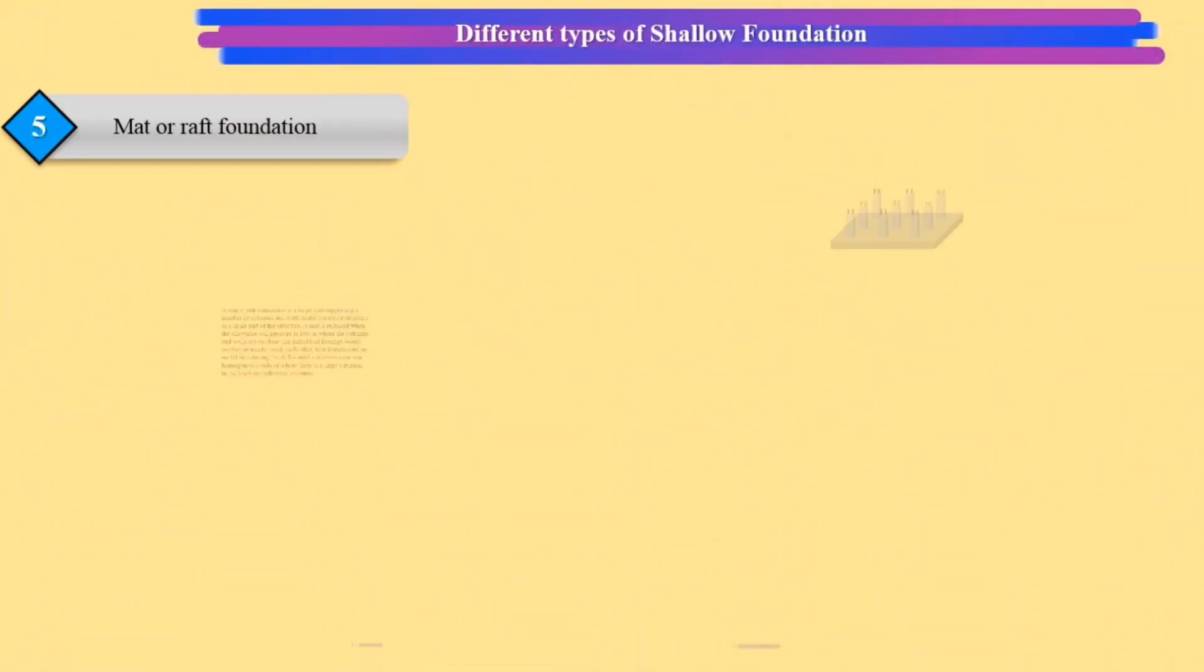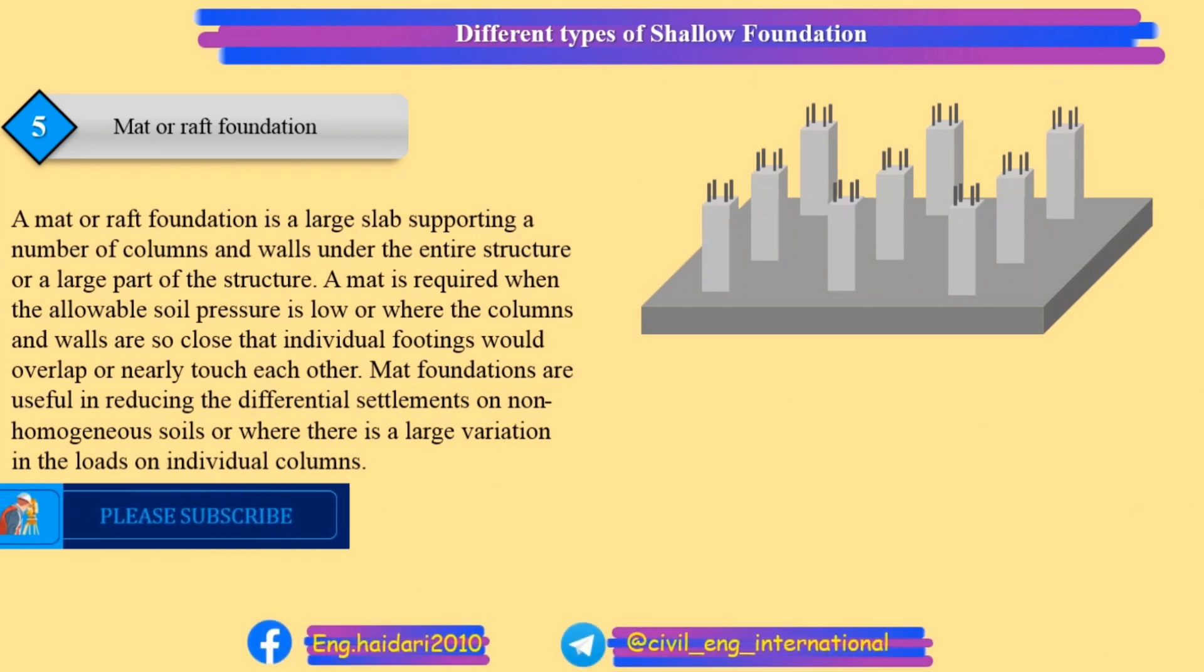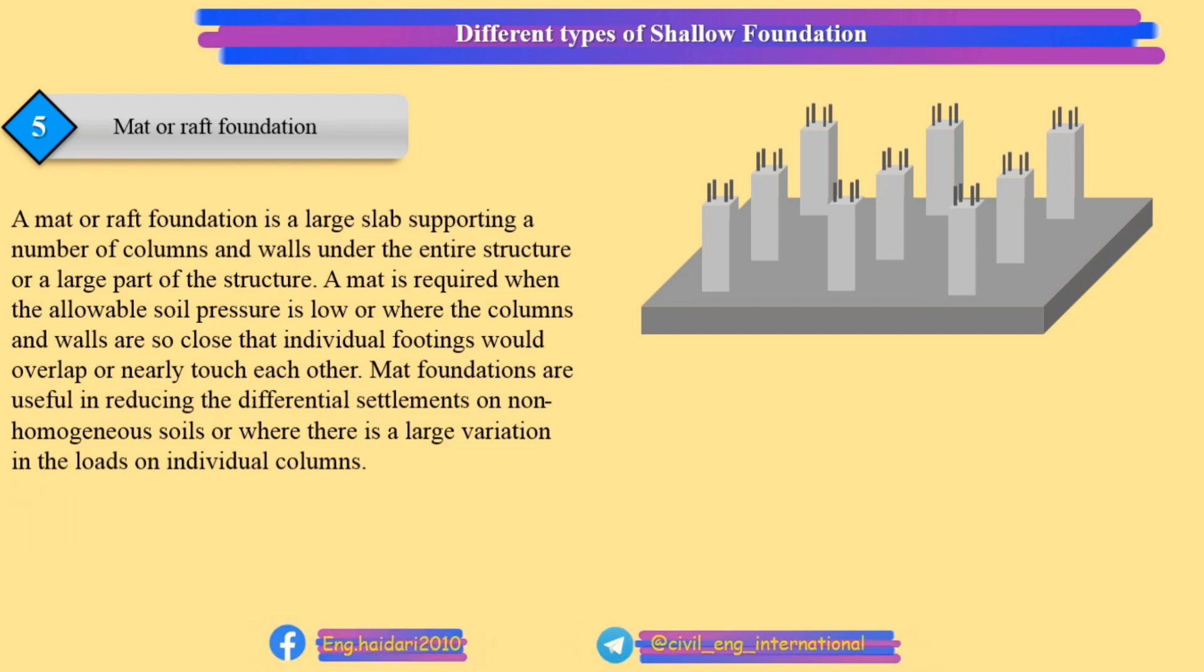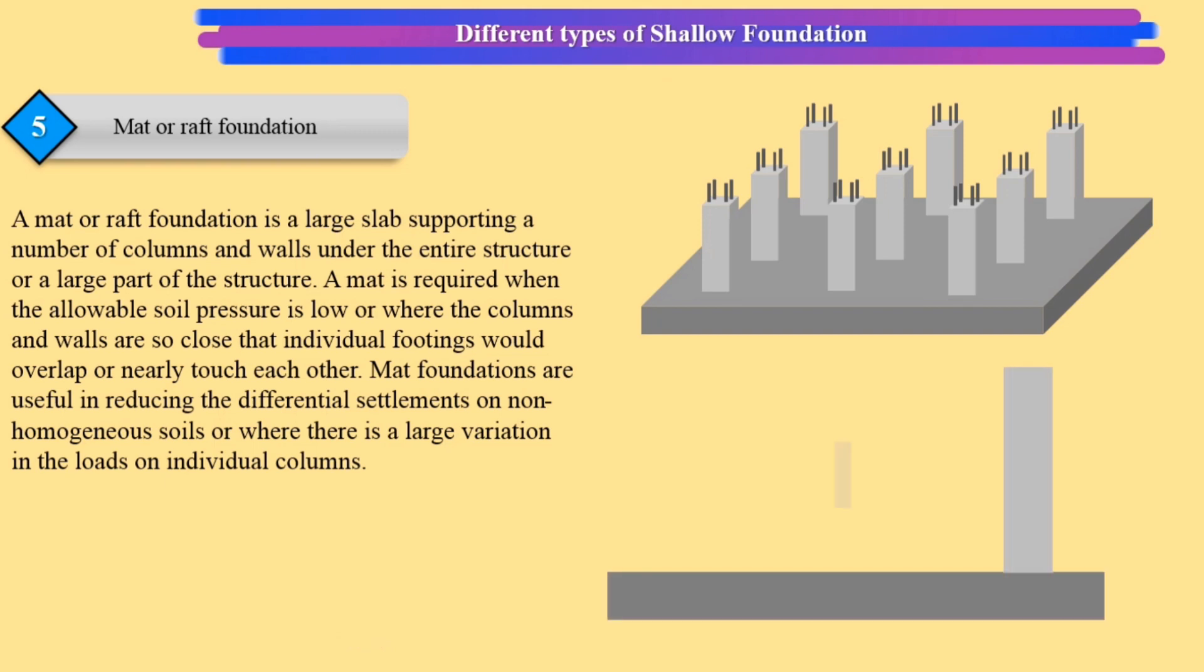Mat or raft foundation: A mat or raft foundation is a large slab supporting a number of columns and walls under the entire structure or a large part of the structure. A mat is required when the allowable soil pressure is low or where the columns and walls are so close that individual footings would overlap or nearly touch each other.